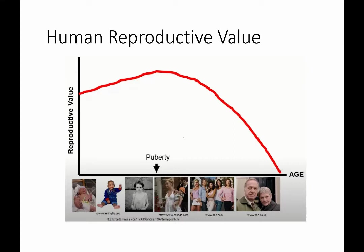We can plot the human reproductive value, and it might follow a curve something like this. Our reproductive value starts off fairly high, as we have the potential to have offspring in the future. Over the course of our childhood, it actually increases, because some children do not survive to reproductive age, so surviving childhood increases the chance of producing more offspring later. Then, after puberty, our reproductive value gradually falls as the chance of having offspring in the future slowly fades, until we are unable to have children at all and our reproductive value reaches zero.